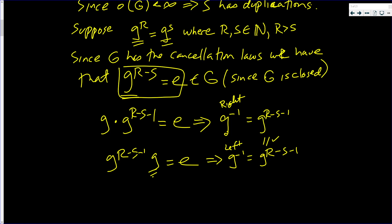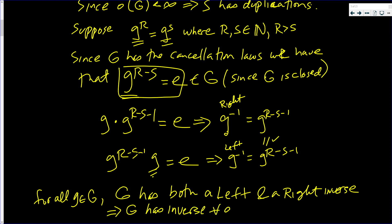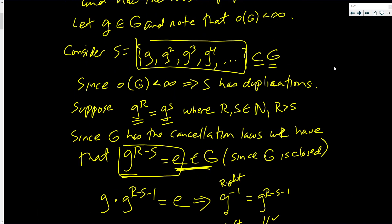So basically, g has left inverses and right inverses. So for all g in G, g has both a left and a right inverse. This implies G has inverses for all g in G. And somewhere we show that e is in G. And inverses are in G.